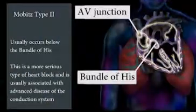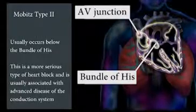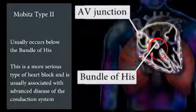Mobitz type 2 second-degree heart block usually occurs below the bundle of His. This is a more serious type of heart block and is usually associated with advanced disease of the conduction system.